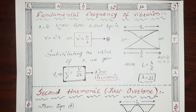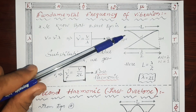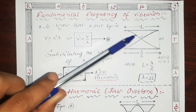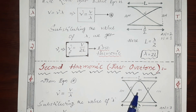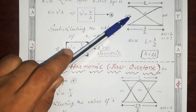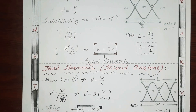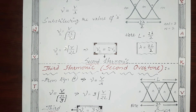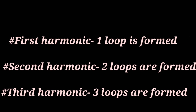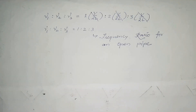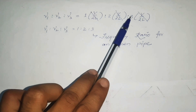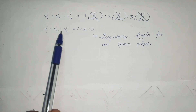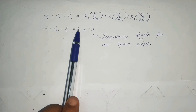If you see all three diagrams together, you get more clarity. In the first harmonic, one loop is formed (half + half = 1). In the second harmonic, two loops are formed. In the third harmonic, three loops are formed. Comparing all three values: ν₁ : ν₂ : ν₃ = 1×(V/2L) : 2×(V/2L) : 3×(V/2L), so the frequencies are in the ratio 1 : 2 : 3.